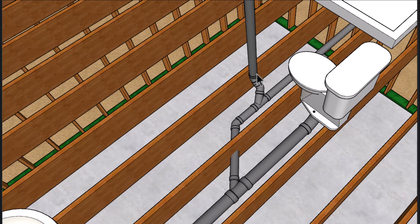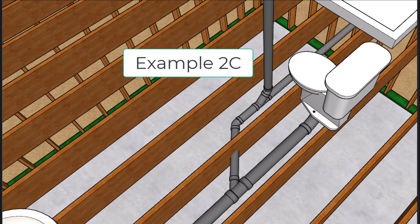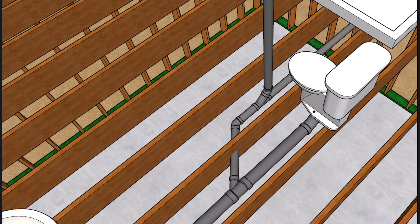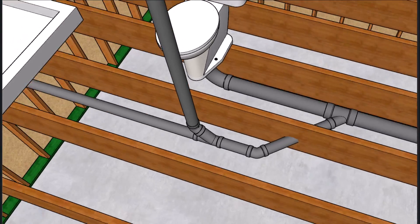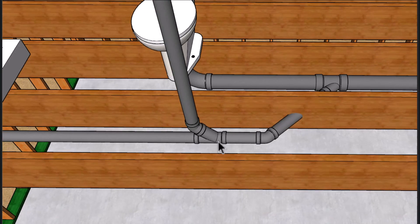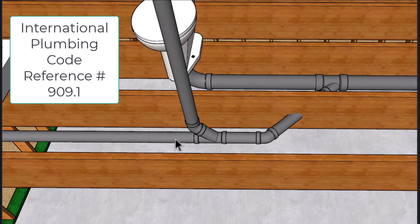This is another example where we're going to be coming up at a 90-degree bend using a Y and another 45-degree street connector. No problem with this one, and I can locate this connection here within the maximum trap arm connection between the trap and the vent.